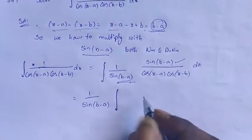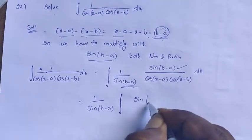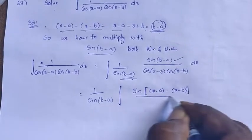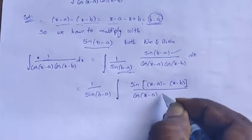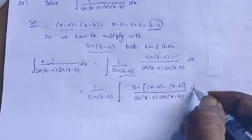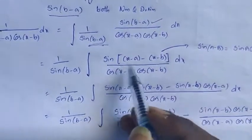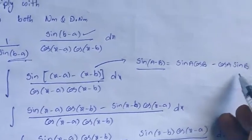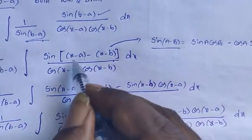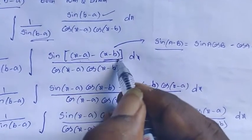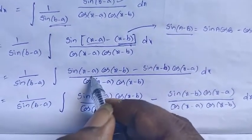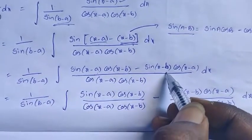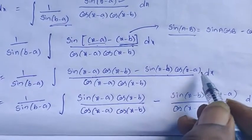Now sin(b minus a) — what can we write for it? Sin of (x minus a) minus (x minus b), divided by cos(x minus a) cos(x minus b) dx. After writing, sin(x minus a) minus (x minus b) is looking like sin(a minus b), which is sin(a)cos(b) minus cos(a)sin(b). Here a stands for x minus a, and b stands for x minus b. So: sin(x minus a)·cos(x minus b) minus sin(x minus b)·cos(x minus a) dx.